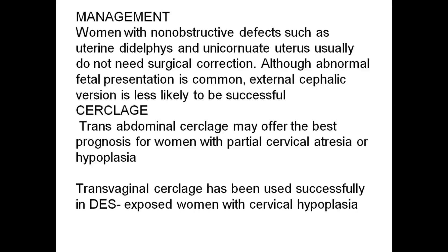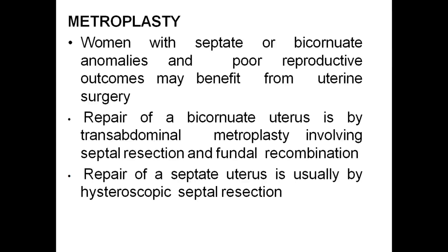Cerclage: transubdominal cerclage may offer the best prognosis for women with partial cervical atresia. Transvaginal cerclage has been successfully used in diethylstilbestrol-exposed women with cervical hypoplasia. Metroplasty: women with septate or bicornuate anomalies and poor reproductive outcomes may benefit from uterine surgery. Repair of bicornuate uterus is by transabdominal metroplasty involving septal resection and fundal recombination. Repair of a septate uterus is usually by means of hysteroscopic septal resection.